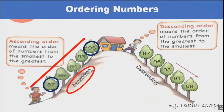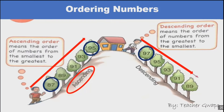While descending order means the numbers are arranged from greatest to smallest. As you can see here, the example starts from 97 and then goes down to 89. So 89 is the smallest and 97 is the greatest. This is called descending order because the number is going down — from the root word 'descent.'